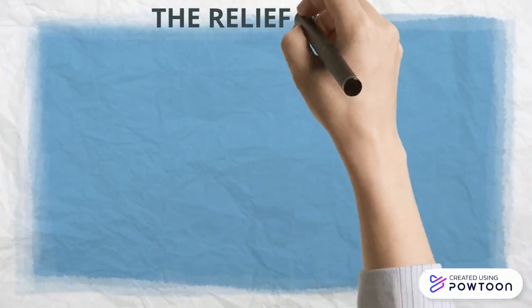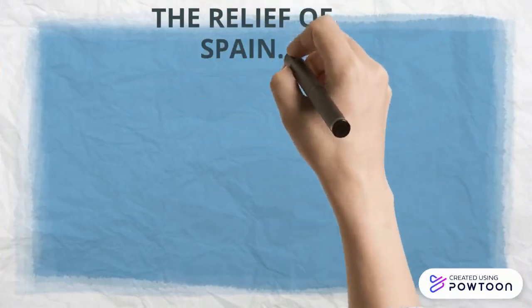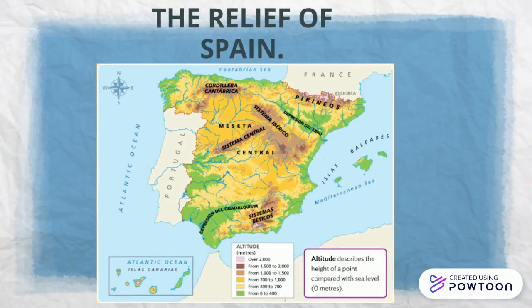Let's go now with the relief of Spain. Here is a map of Spain — a physical map — and you can see different colors. They represent the altitude in each part of Spain. The green ones are the lowest parts, near the sea level, and the brown ones are the highest parts.